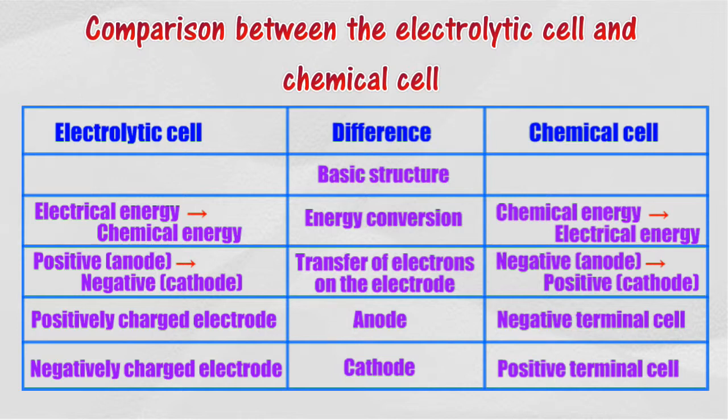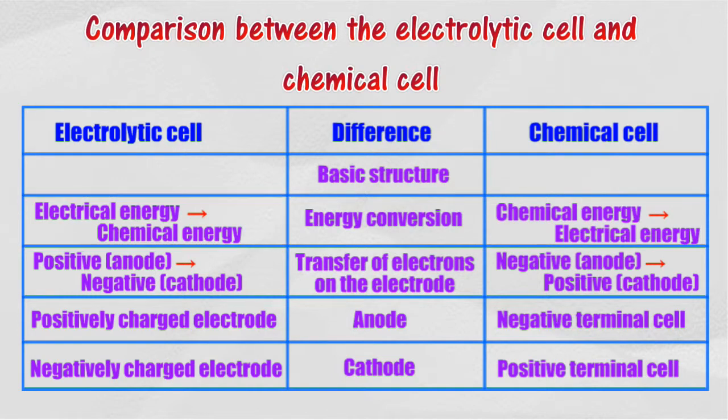In the electrolytic cell, electrical energy converts to chemical energy, while in the chemical cell it is vice versa.